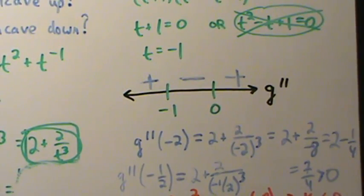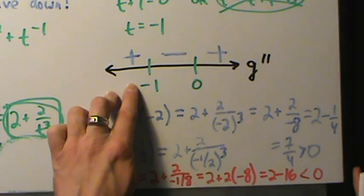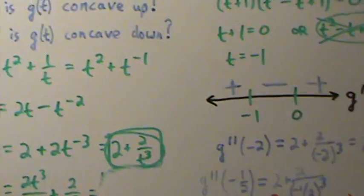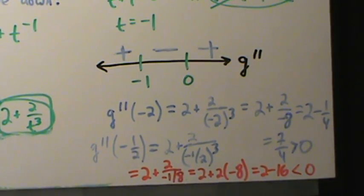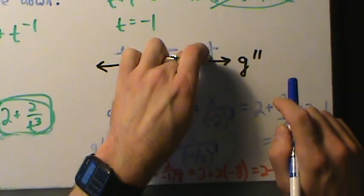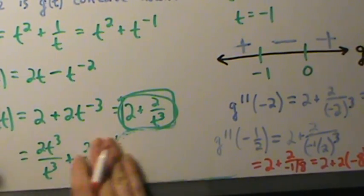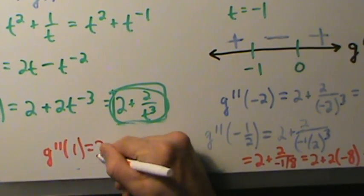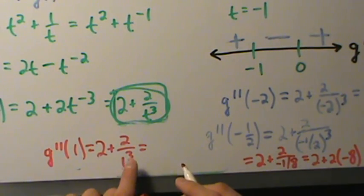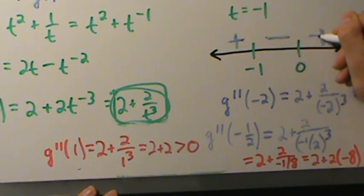So now we know where the function is concave up and where it's concave down. The function is concave up when the second derivative is positive — that's on negative infinity to negative 1 and on 0 to infinity. The function is concave down when the second derivative is negative — that's from negative 1 to 0.